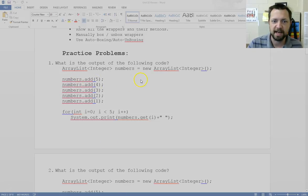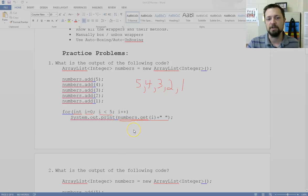If we do numbers.add 5, our ArrayList will hold a 5. Then we add a 4 because add adds to the back. Then 3, then 2, then 1. And if we were to print off all the numbers separated by spaces, starting from position 0 going all the way to less than 5, so that would be 0, 1, 2, 3, 4, all the positions, it would print off 5, 4, 3, 2, 1 all separated by spaces.